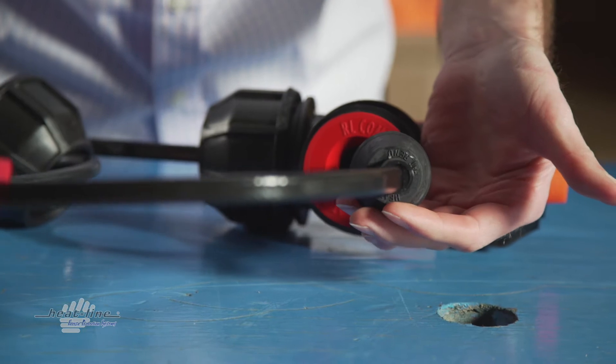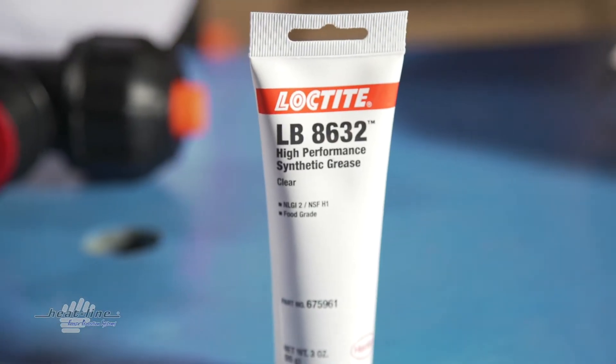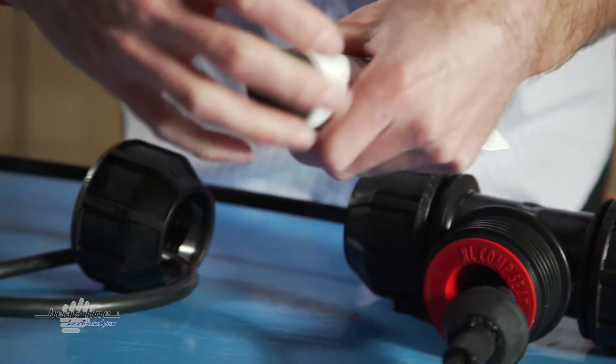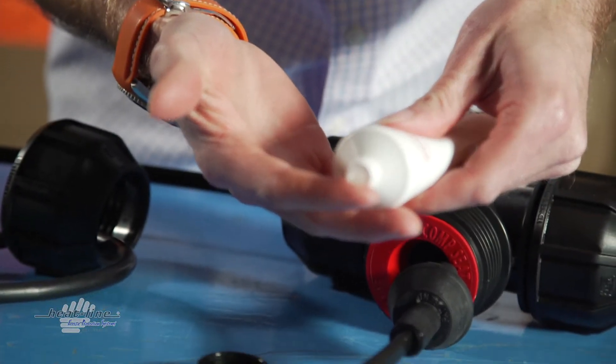This will reduce the heater length inside the pipe. Once the heat line grommet has been positioned at the new desired heater length, apply a non-toxic lubricant to the top of the heat line grommet.